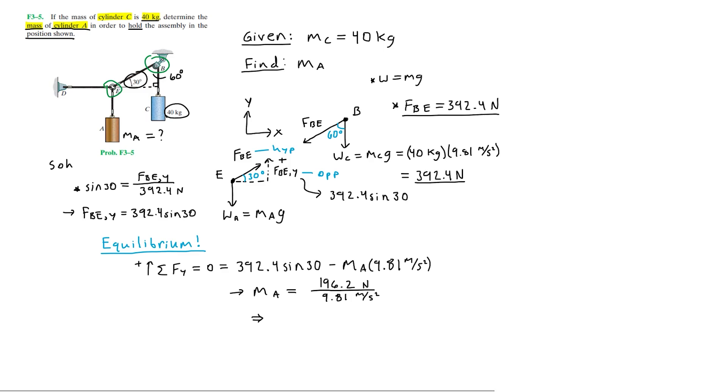Hence, the mass of cylinder A, MA, is equal to 20 kilograms.